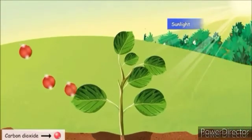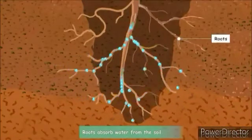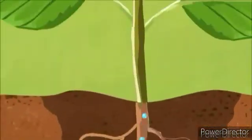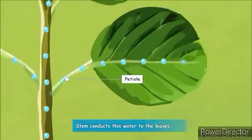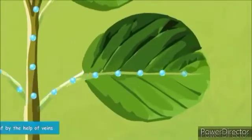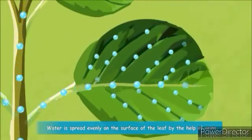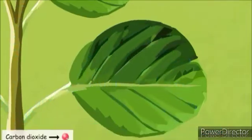Water from the soil is absorbed by the roots of the plant. From roots, water travels through the stem and the petiole and then to the leaves. Water is distributed to the entire surface of the leaves by the veins.